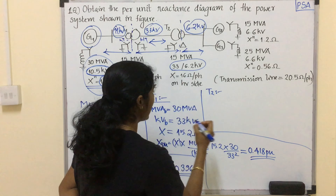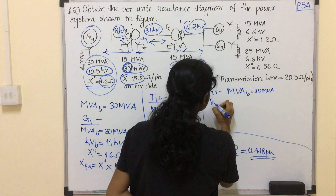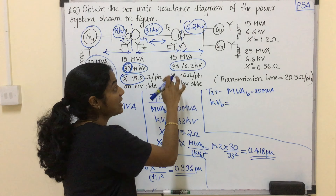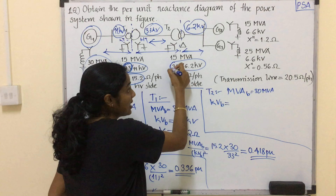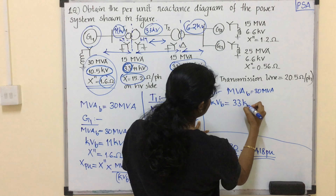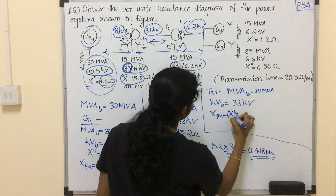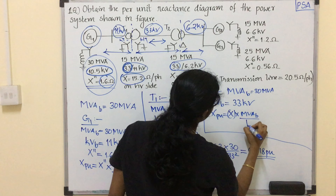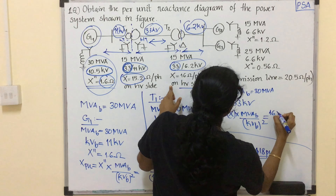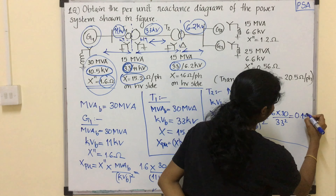For T2, again MVA base equals 30 MVA. The reactance X is equal to 16 ohm per phase on the HV side. HV side value is 33 kV, so KV base equals 33 kV. X per unit equals X multiplied by MVA base divided by KV base squared, which is 16 multiplied by 30 divided by 33 squared. The value will be 0.44 per unit.